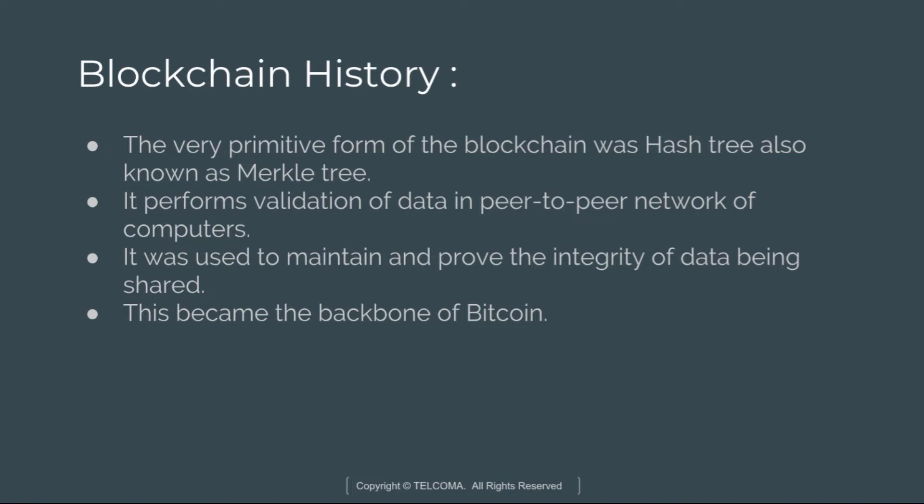The very primitive form of blockchain was the hash tree, also known as the Merkle tree. This blockchain technology enables distributed public ledgers that hold immutable data in a secure and encrypted way, ensuring that transactions can never be altered. This data structure was patented by Ralph Merkle in 1979.